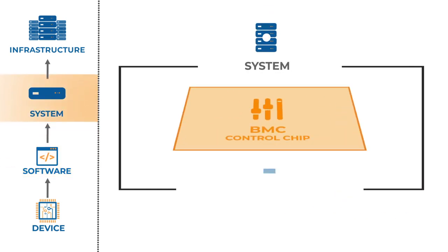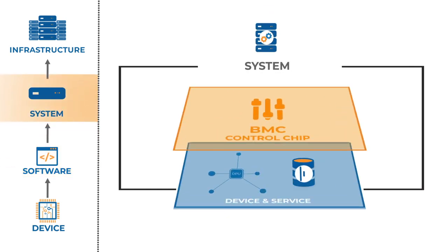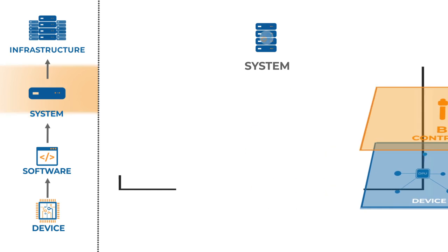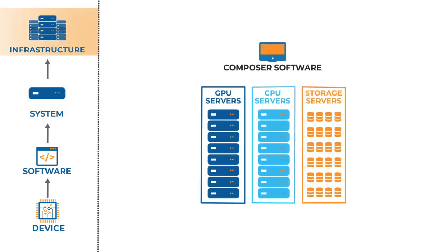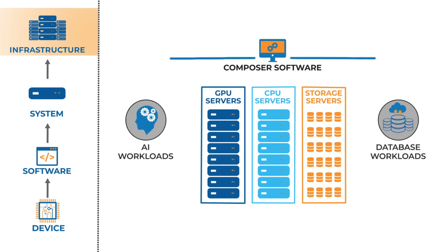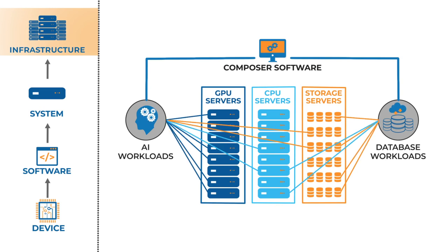At the system level, the storage data path enabled by the device and services is the data plane, while the controls for the storage system — for example, what to do when the system malfunctions — are implemented in the control plane. Last but not least, at the highest level, the servers now become the data plane, and the software which composes the server resources is in the control plane.